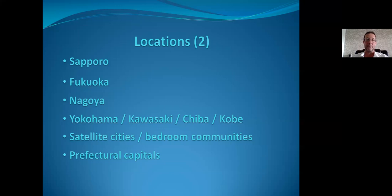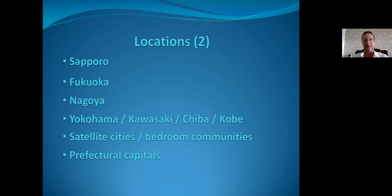Nagoya is quite blue collar but has stable, diverse industries. It took a significant price drop during COVID, making it a good buying opportunity now — though be prepared for slightly more frequent tenant issues such as payment problems or mid-lease cancellations compared to other Japanese cities. Importantly, Japan's tenancy laws are uniform nationwide, unlike the US where you must check local regulations. Japan generally favors tenants: landlords must honor the full lease term and sometimes renew automatically, while tenants can leave with just one to two months' compensation.